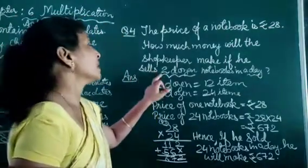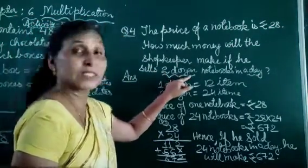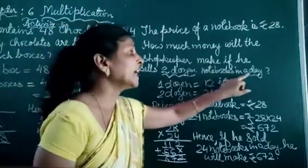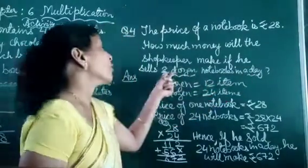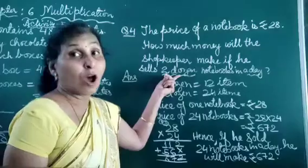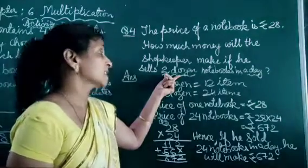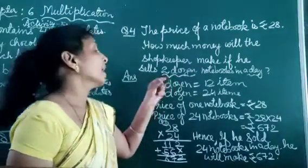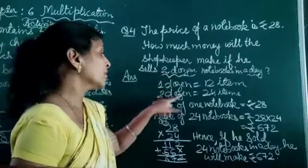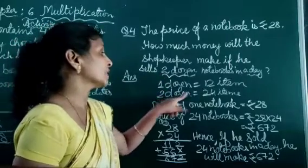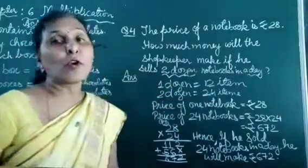Children, you should remember that here 2 dozen is given, and here in a day. So we find out how many items are in 2 dozen. Clear? So here I write it that 2 dozen equals 24 items.